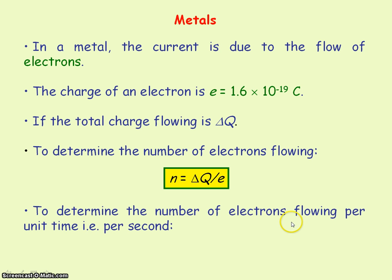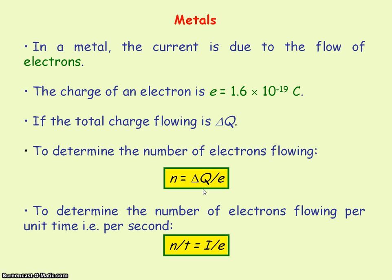To determine the number of electrons flowing per unit time — or per second — we take that equation and divide both sides by time t. Then delta Q divided by t is our current, so the number of electrons flowing per unit time equals our current divided by the charge of each electron. Note that these two equations are not on the formula sheet, so they are ones you would have to remember.